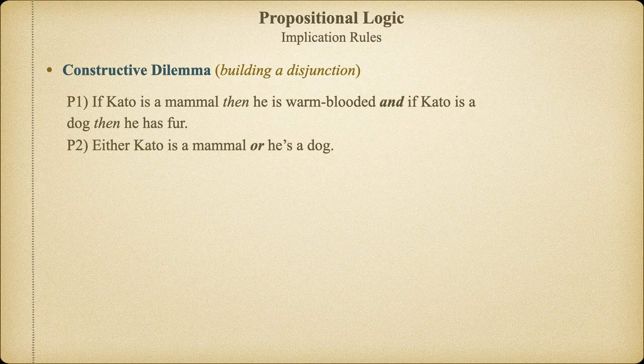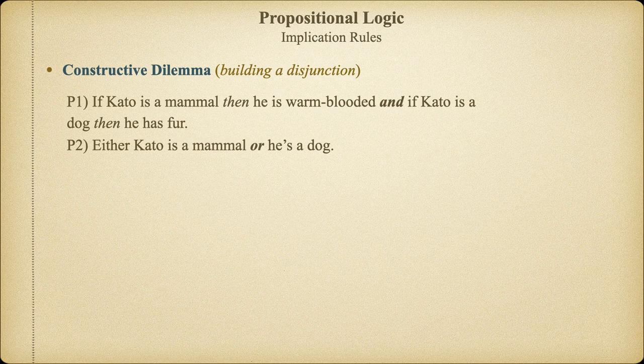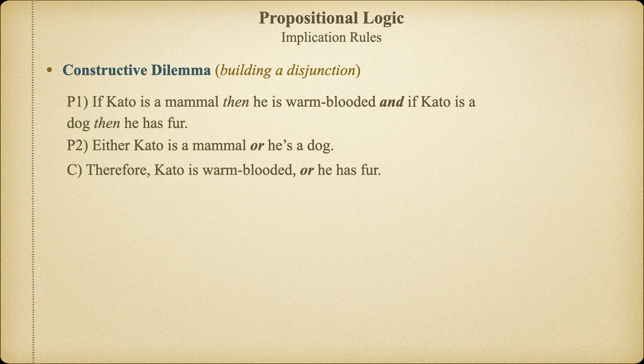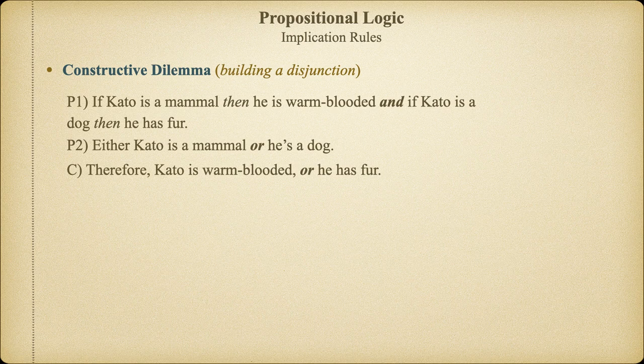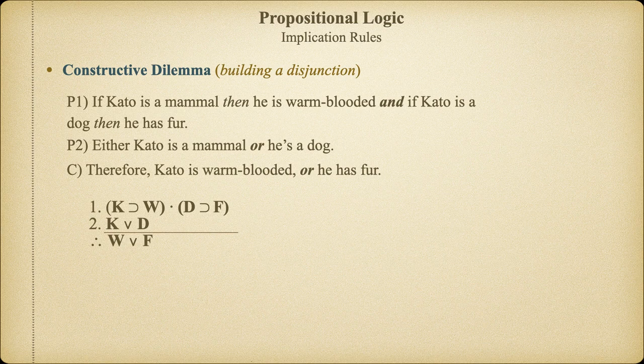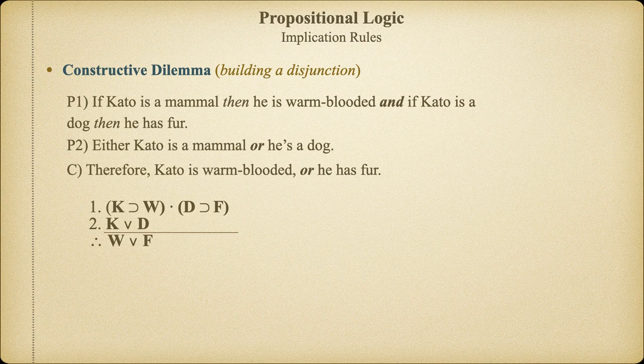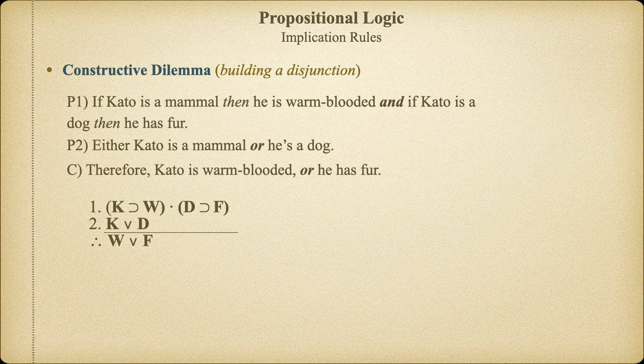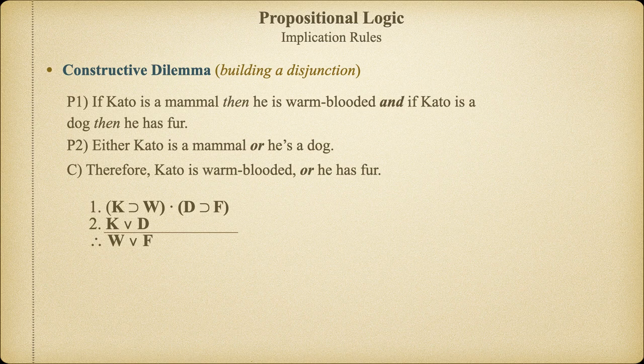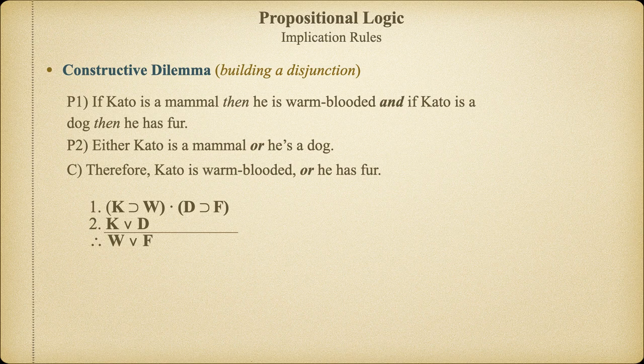If we add, as a second premise, the disjunction either Kato is a mammal or he's a dog, we are set up to conclude a disjunction of the consequence of the two material implications, that is, Kato is warm-blooded or Kato has fur. Now, let's symbolize the argument to make it a bit more clear. Notice that premise two contains the antecedent of both material implications from premise one disjuncted together. I don't know whether K or D is true, but I do know that at least one of them must be true. If it turns out to be K, then W will follow. And if it turns out to be D, then F would follow. But, since I don't know whether K or D is going to be true, I don't know whether W or F will be true, but I do know that at least one of them will be true.